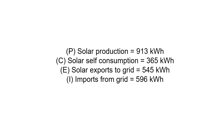So here are the four numbers we're interested in, all summarised: production 913, self-consumption 365, exports to grid 545, and imports from the grid 596.